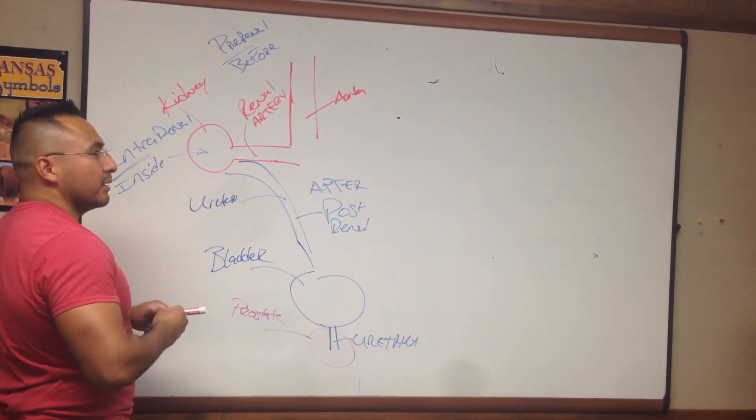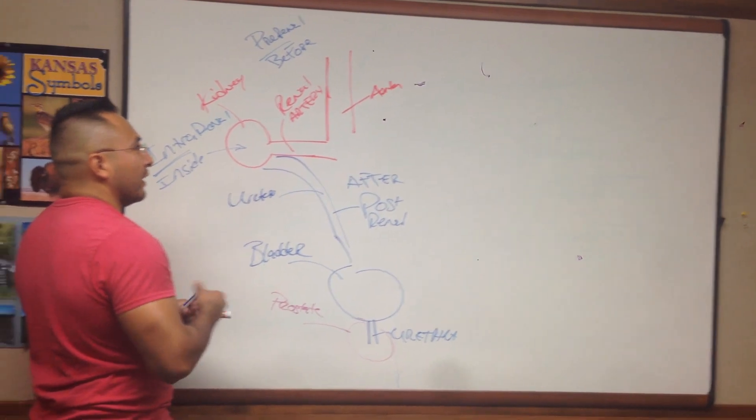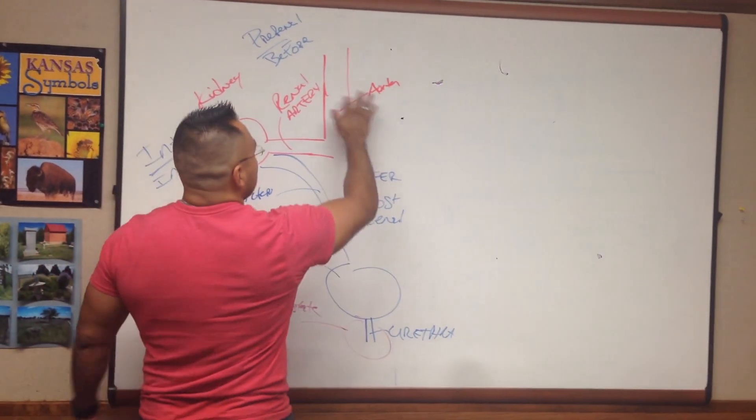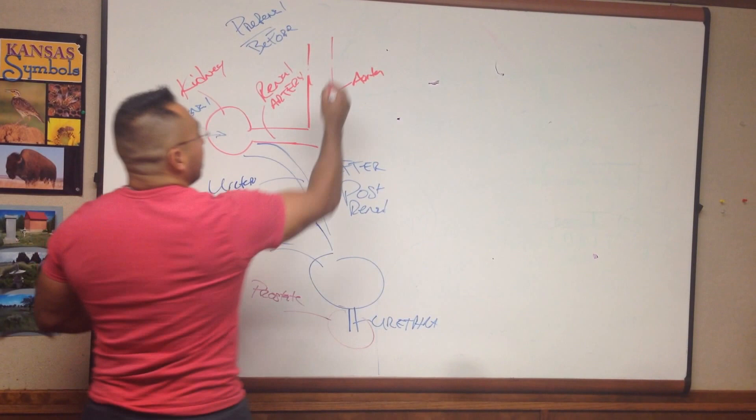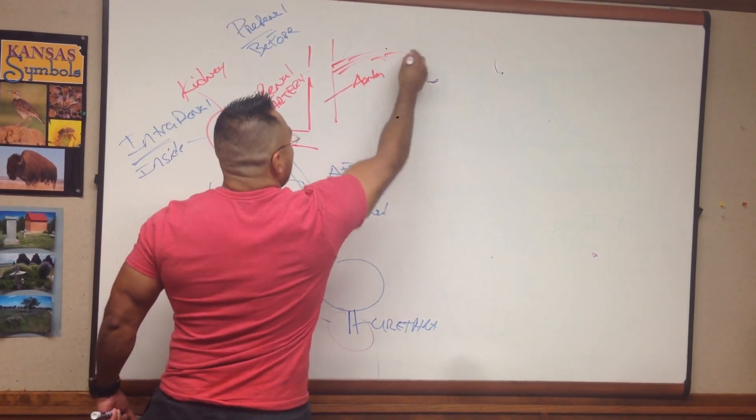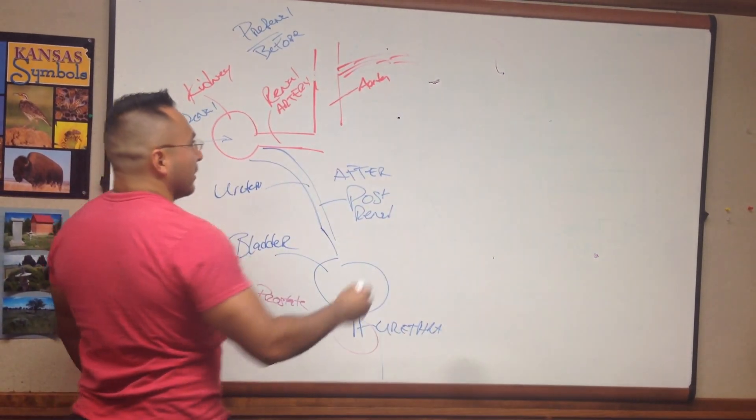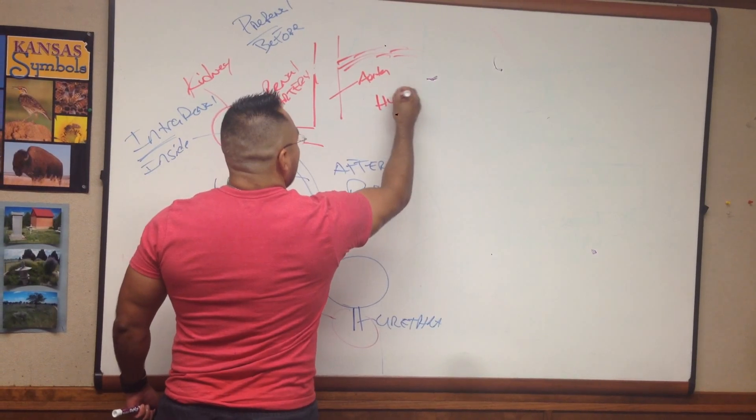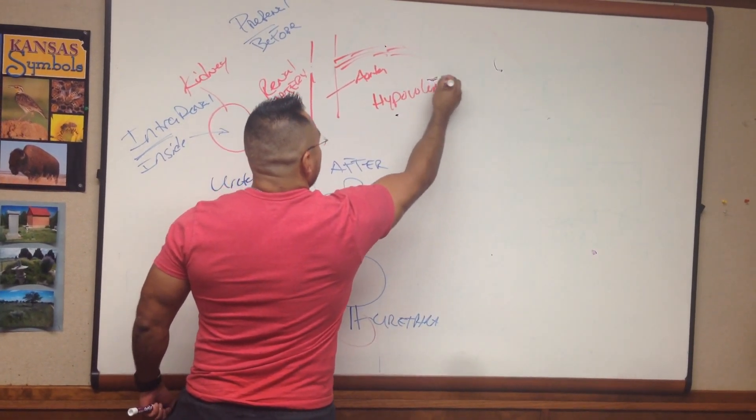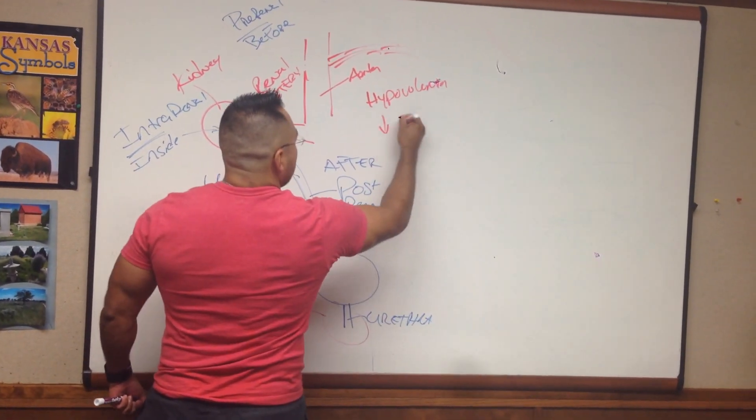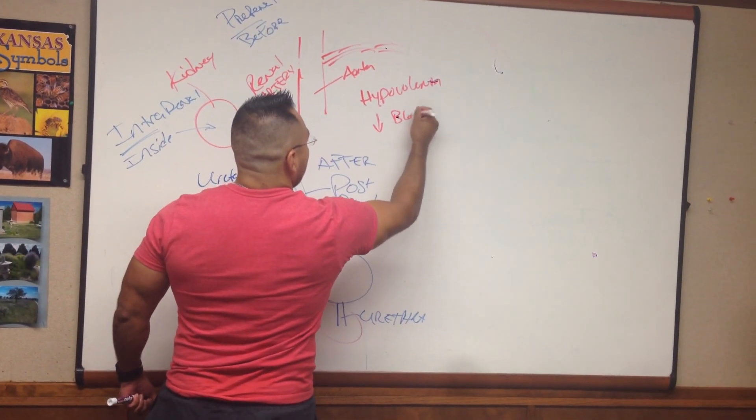So things that would affect pre-renal failure would be something like, if you get stabbed, shot, and you're just bleeding out all kinds of blood, what's that going to do? It's going to cause hypovolemia, or decrease in blood volume.